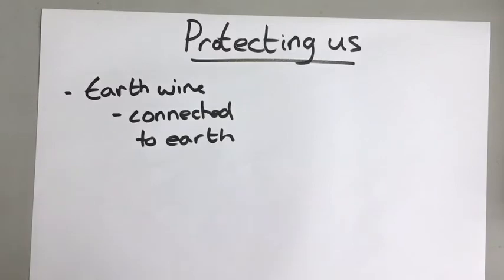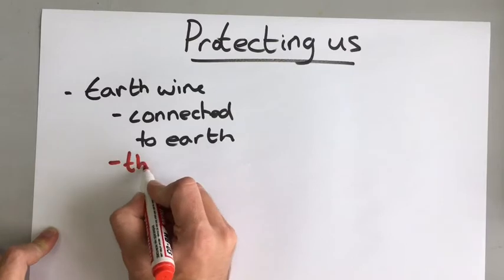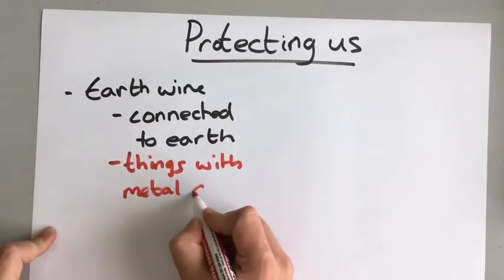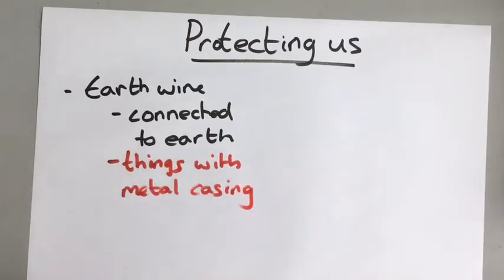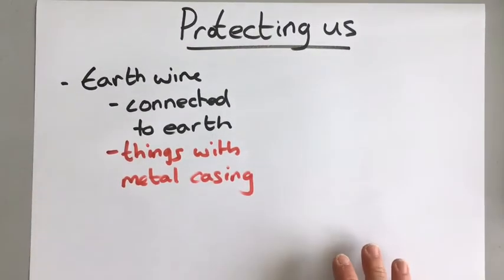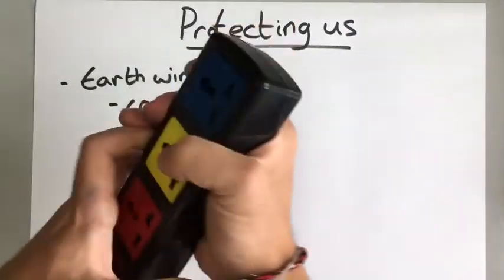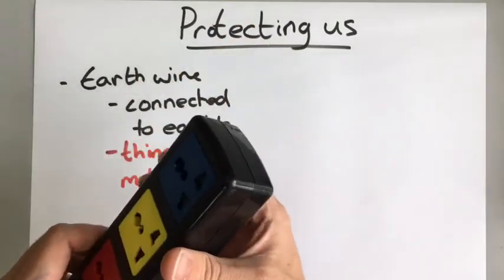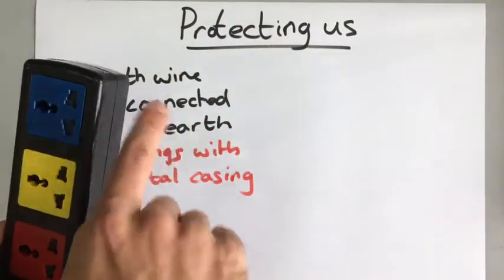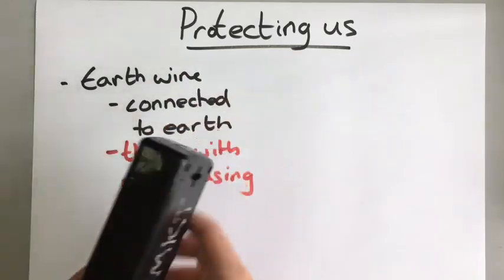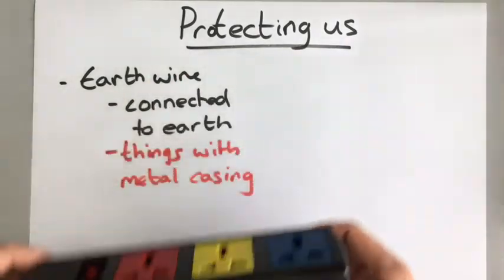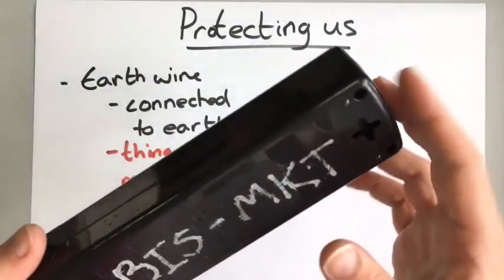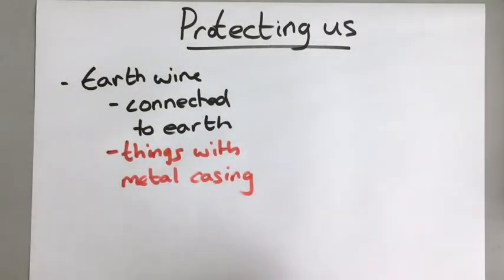So the first thing that we have is earth wires and they are usually connected to things with metal frames. Now the things with the metal casing is more important to have an earth wire because if it's got a plastic casing like this I can't get an electric shock off that because it's made of plastic. But if this outer surface was made of metal and one of the contacts inside accidentally touched the metal casing I could get an electric shock. So things that are made of plastic you generally don't need an earth wire but things that are made of metal you do need an earth wire.